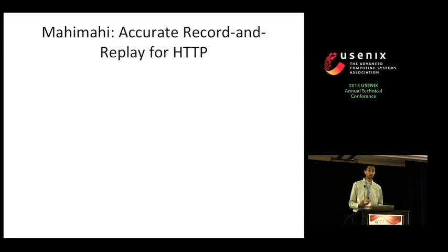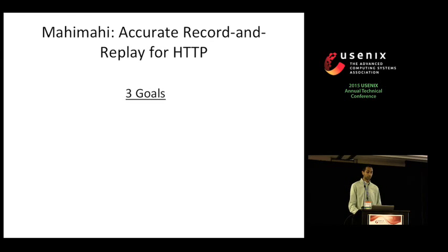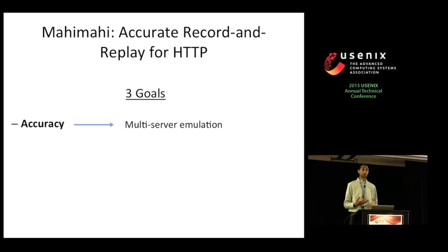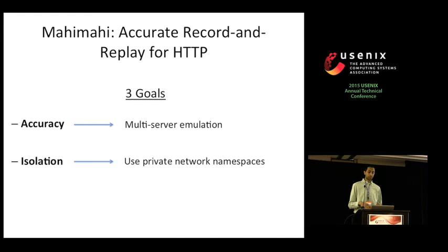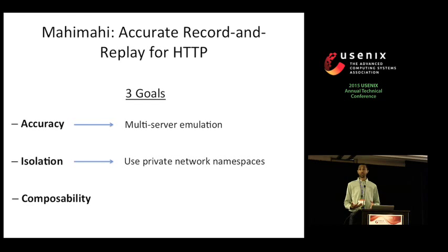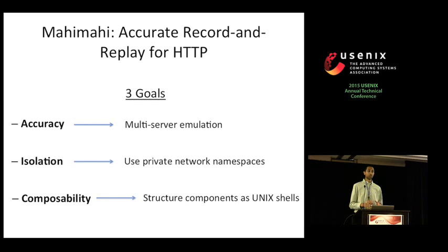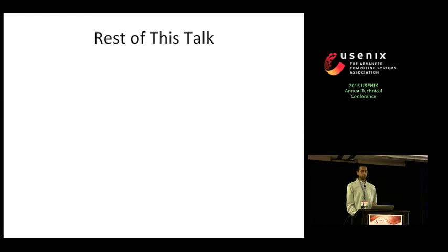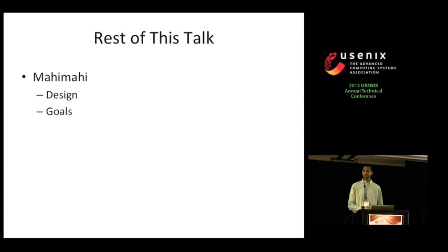To overcome these issues, we created a new record and replay framework called MahiMahi, with three main goals. First, we wanted to provide accurate measurements, achieved by preserving the multi-server nature of web applications during replay. Second, we wanted isolation for experiments, achieved using Linux's network namespaces — logical copies of the network stack including routes and interfaces. Third, we wanted each component to be composable for experimental flexibility, achieved by structuring each component as a Unix shell.